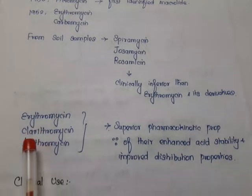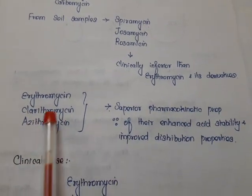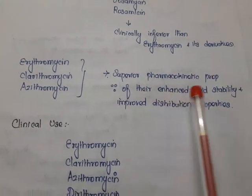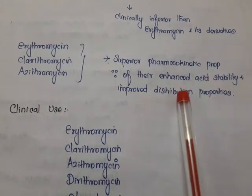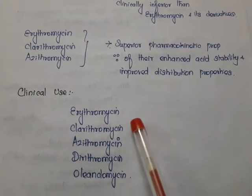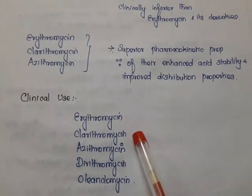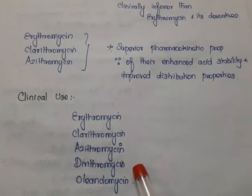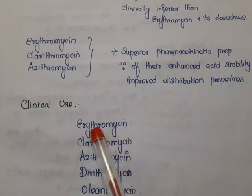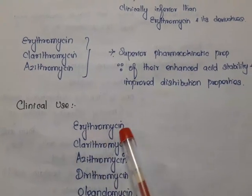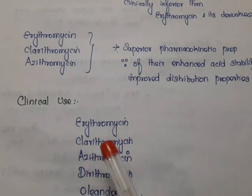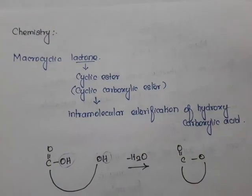Erythromycin and its derivatives — examples include clarithromycin and azithromycin — have superior pharmacokinetic properties because of enhanced acid stability and improved distribution properties. The clinically used macrolides are erythromycin, clarithromycin, azithromycin, dirithromycin, and oleandomycin. All are ending with '-thromycin', which identifies them as clinically used macrolides.